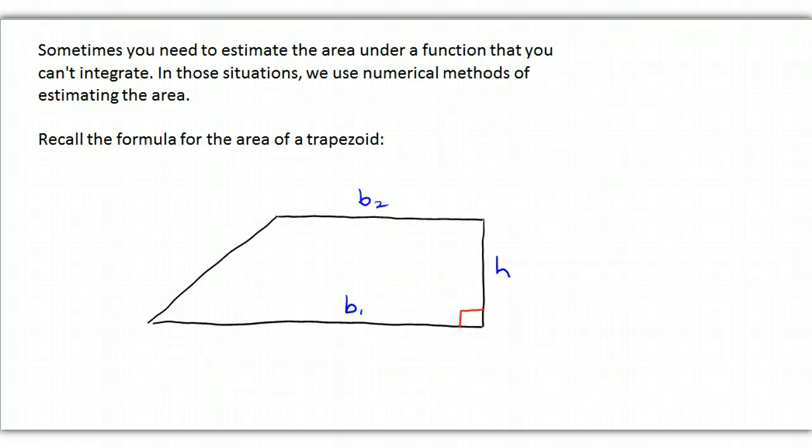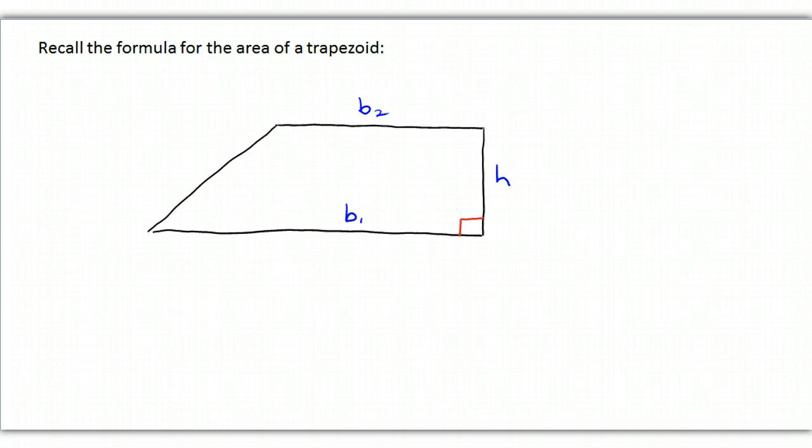So to get started with that, we need to recall the formula for the area of a trapezoid, which says that the area is the height of the trapezoid divided by 2 times the sum of the bases, B1 and B2. So this is B1 and this is B2.